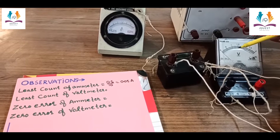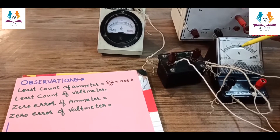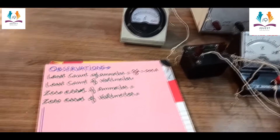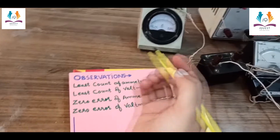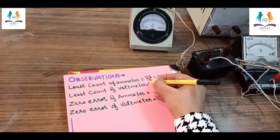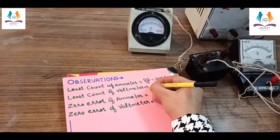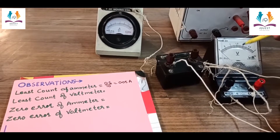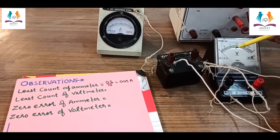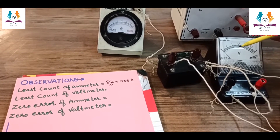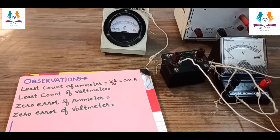In the same way we find the least count of our voltmeter. Here also 10 divisions equals 0.5 volt, which means one division equals 0.05 volt.